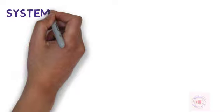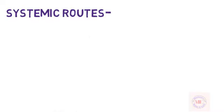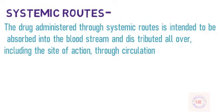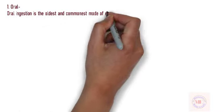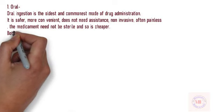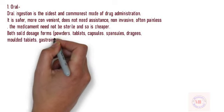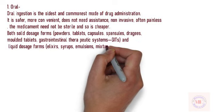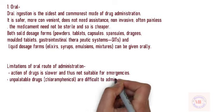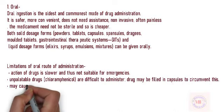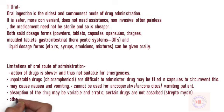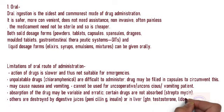Systemic routes: The drug administered through systemic routes is intended to be absorbed into the bloodstream and distributed all over, including the site of action, through circulation. Oral ingestion is the oldest and commonest mode of drug administration. It is safer, more convenient, does not need assistance, non-invasive, often painless, and the medicament need not be sterile, and so is cheaper. Both solid dosage forms (powders, tablets, capsules, spansules, dragees, molded tablets, gastrointestinal therapeutic systems) and liquid dosage forms (elixirs, syrups, emulsions, mixtures) can be given orally.